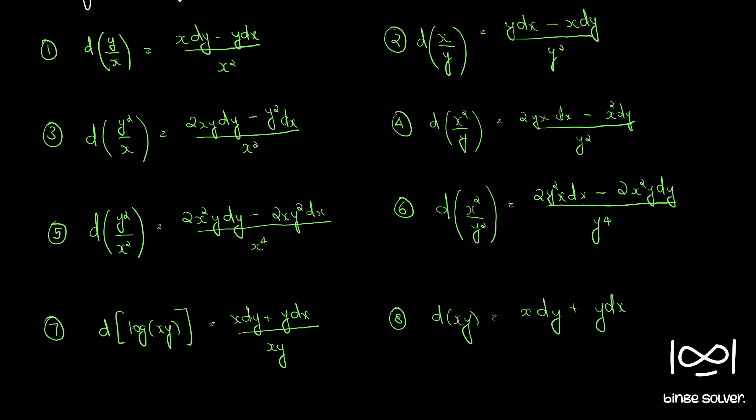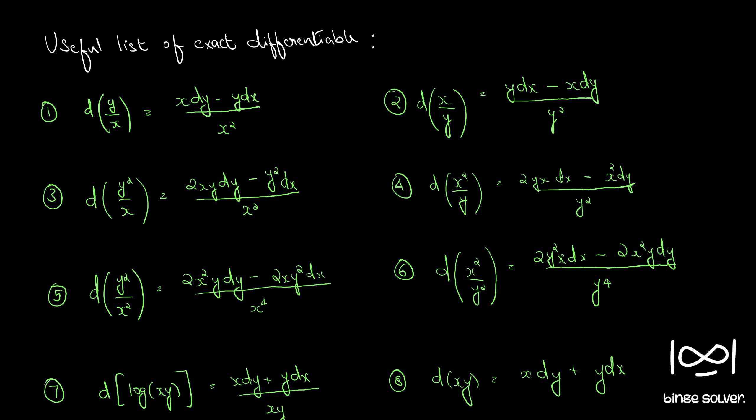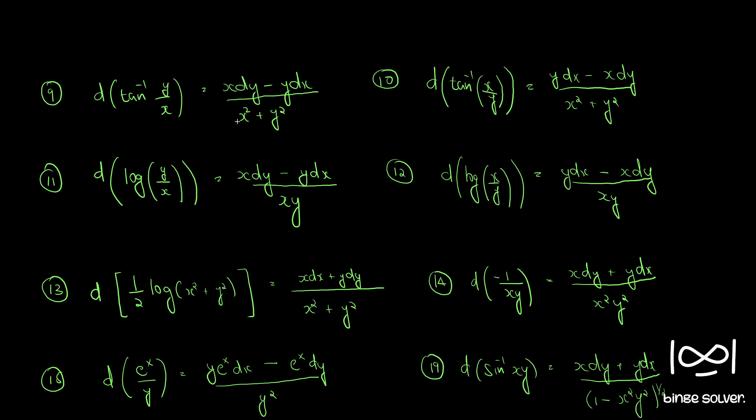Similarly, if there is x squared plus y squared in the denominator, there is a chance that tan inverse is involved. We can rearrange in such terms that there is a differential of tan inverse y by x or tan inverse x by y in the differential equation.